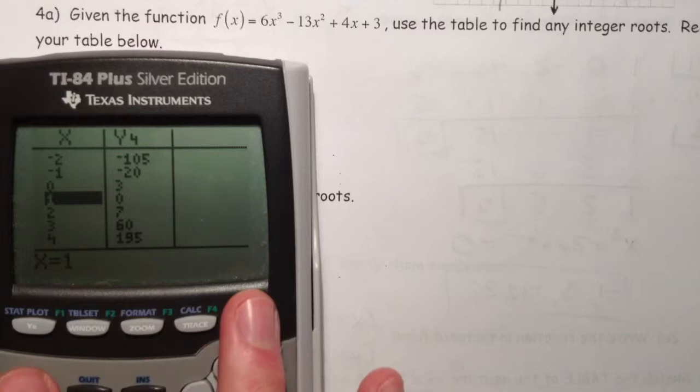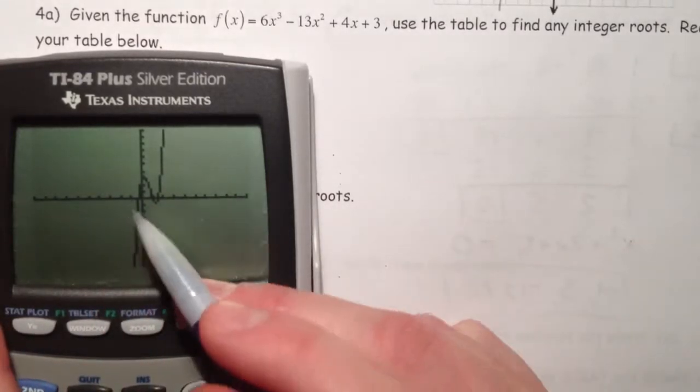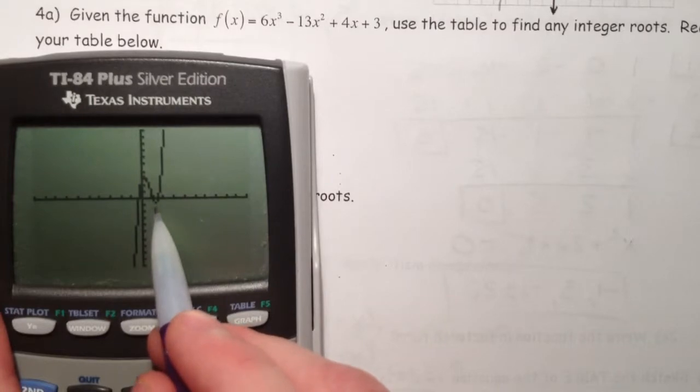So 1, 0 is an integer root. If you're looking at the graph, notice it looks like it crosses at 1. Maybe it crosses at 2, but it's looking like it crosses in between.